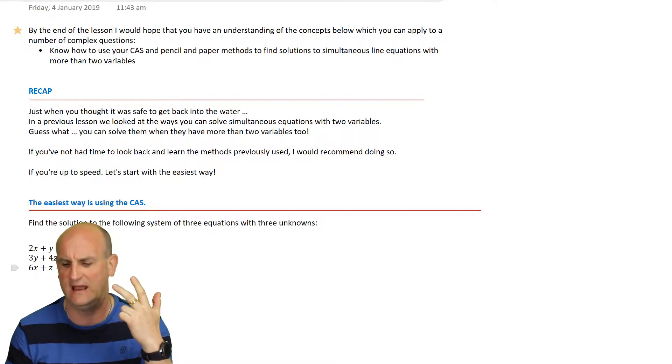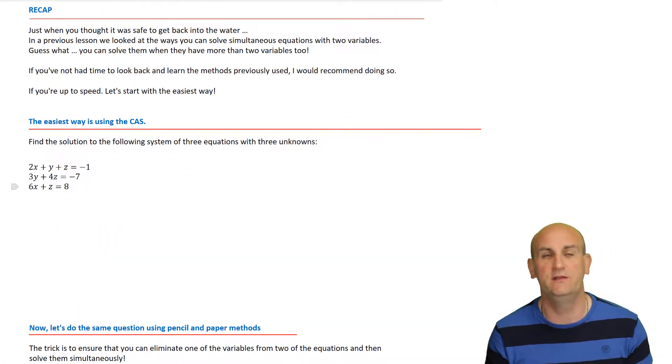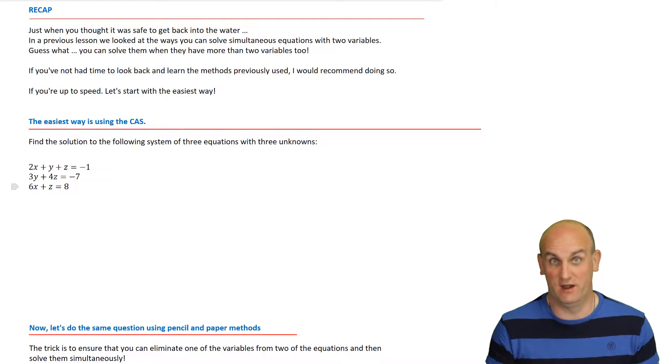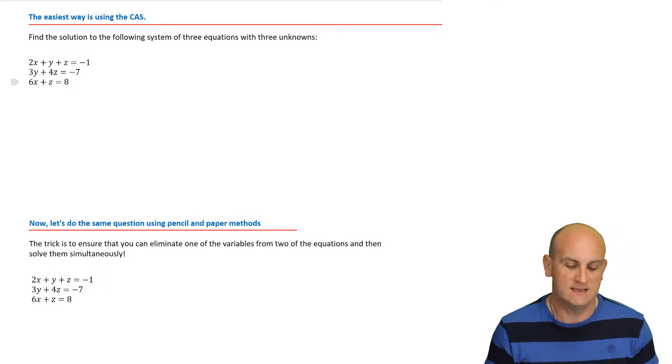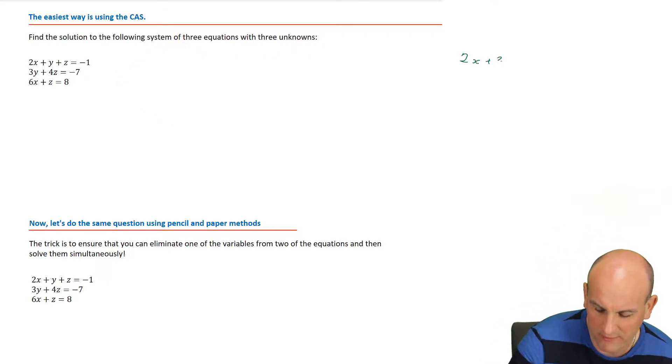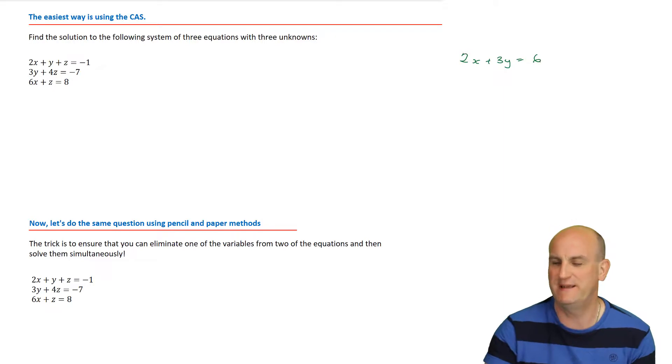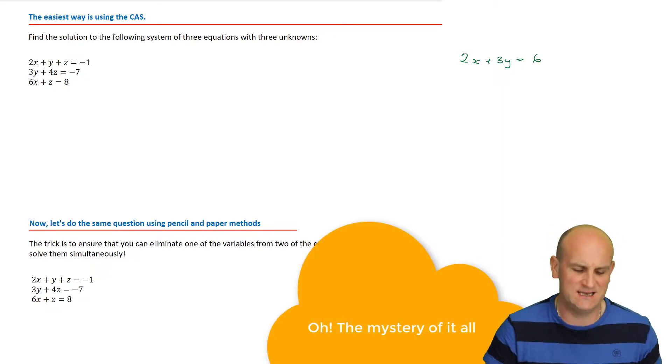Now you're sitting there going hold on a moment, it was hard enough with two variables - you gave me elimination and substitution and CAS and matrices and graphing - and you're telling me we can throw in another variable and I have to do it by pencil and paper. No, not really, because basically you can do it with the CAS and I'm pretty sure you'd be able to use your calculator. Trying to do this by pencil and paper is quite long. So let's look at what a simultaneous equation looks like with three unknowns.